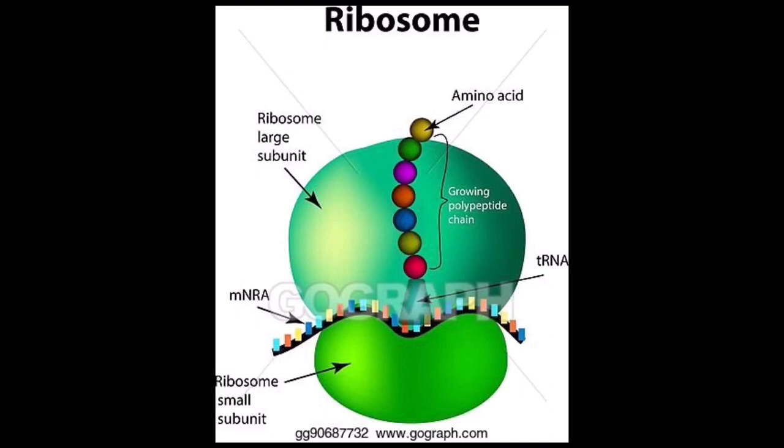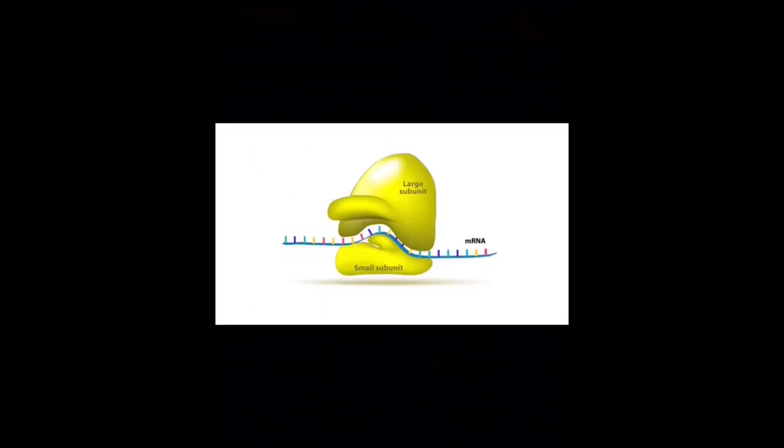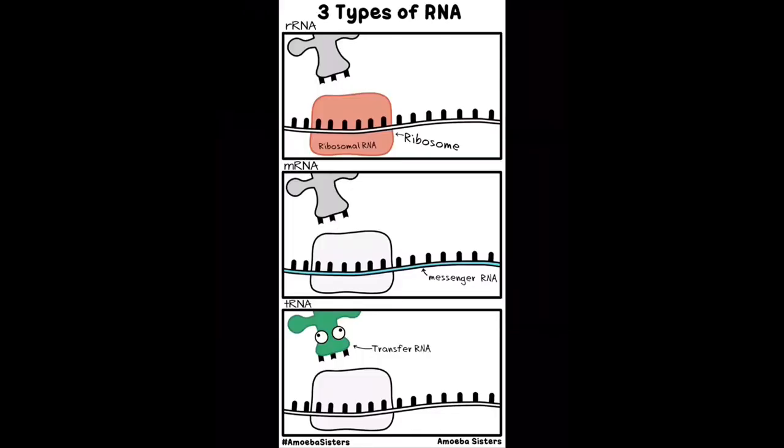Ribosomes consist of two major components: the small and large ribosomal subunits. Each subunit consists of one or more ribosomal RNA molecules and many ribosomal proteins. The ribosomes and associated molecules are also known as the translational apparatus.